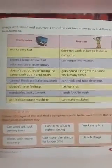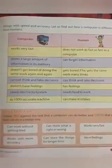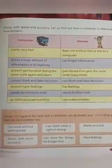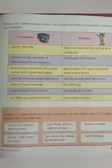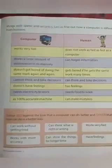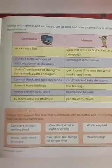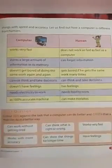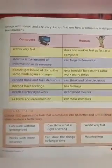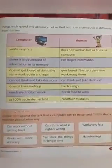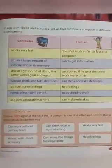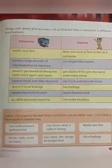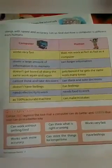Humans have feelings. Humans need food to work — what we need to work is food. And humans can make mistakes, unlike the computer which is 100% accurate.